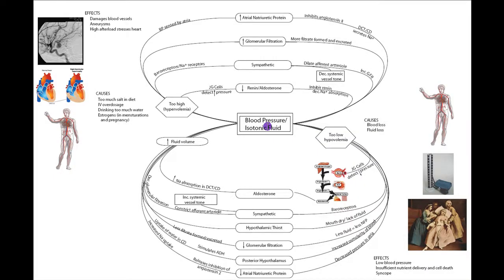This chart describes the basic homeostasis of blood pressure and isotonic fluid. With any homeostatic diagram, we've got to talk about four major components: the names of too low and too high, the causes of too low and too high, the effects of too low and too high, and then how the body is going to correct this deviation from homeostasis.